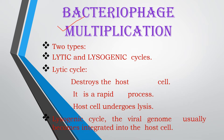In the case of the lysogenic cycle, the bacteriophage does not degrade the host cell. Instead, it integrates with the host genome to form a structure called prophage, which we will discuss in the next slide.